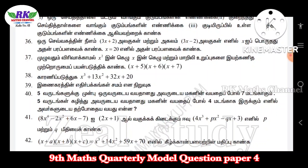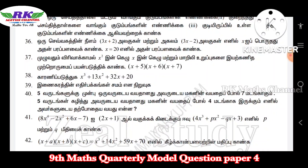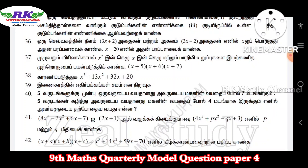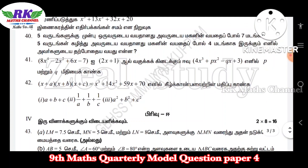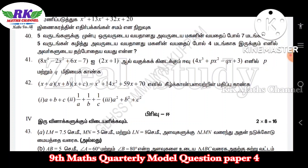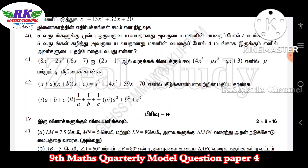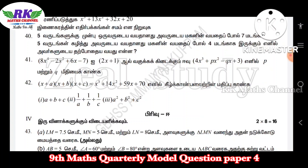In a parallelogram, opposite sides are equal — prove it. Next, question number 40: algebra. Question number 41: 8x⁴ minus 2x² plus 6 divided by 2x plus 1 — find the p value and q value. It's not synthetic division, it's the exercise — easy.